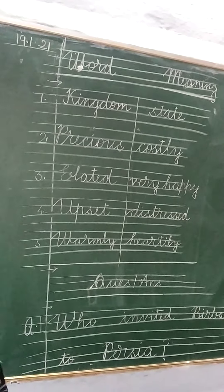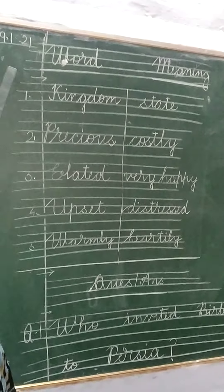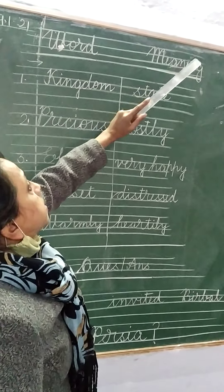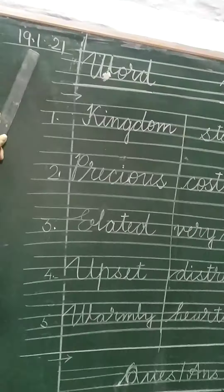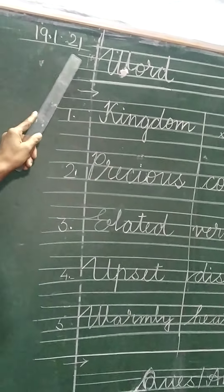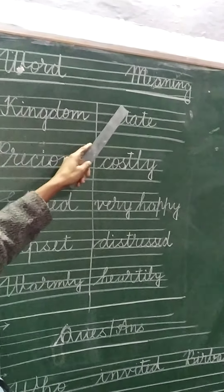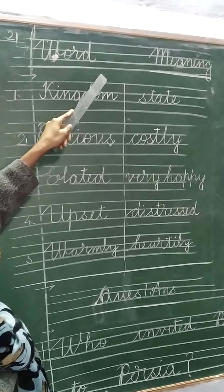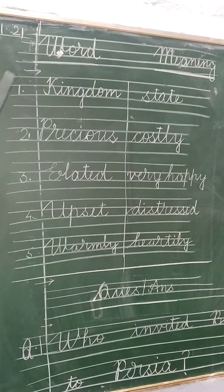Good morning everyone. This is your English literature period. We will continue our work with word meaning of lesson 14, the present day. You have to write down today's date. Today's date is 19 January 2021. Then mention word meaning in your copy. Draw a blue pencil line, then divide your page into equal halves.